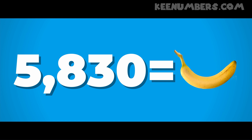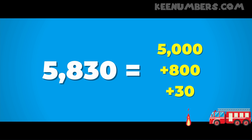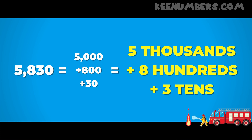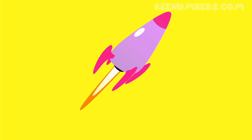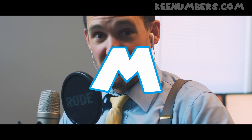Five thousand eight hundred thirty is not equal to a banana — I don't know how the banana keeps showing up on the math set! Rather, five thousand eight hundred thirty equals five thousand plus eight hundred plus thirty. That's another way of saying five thousands and eight hundreds and three tens. If it seems like a lot, feel free to pause and rewind. I had so much fun learning about the tens place, the hundreds place, the thousands place with you!